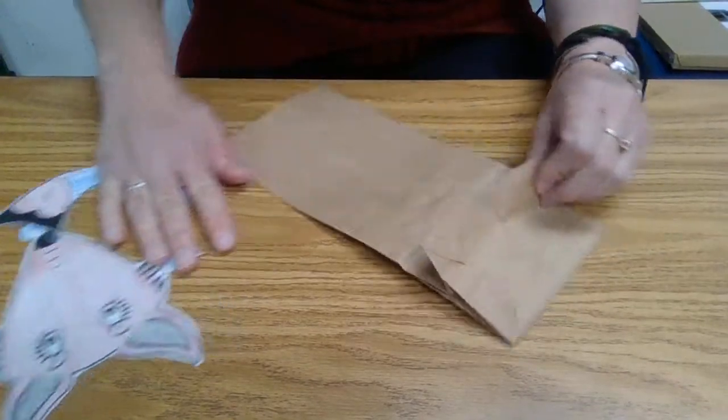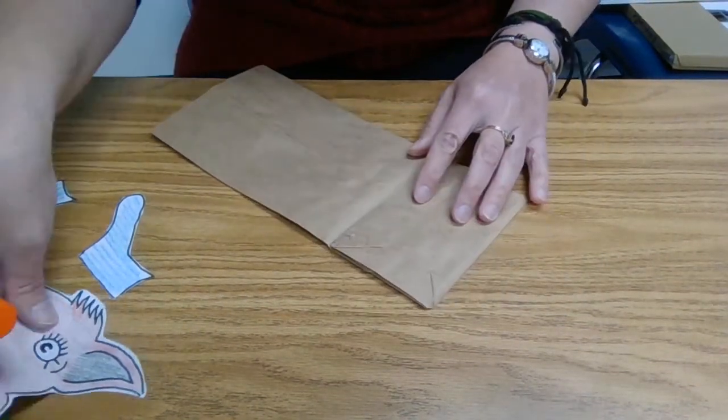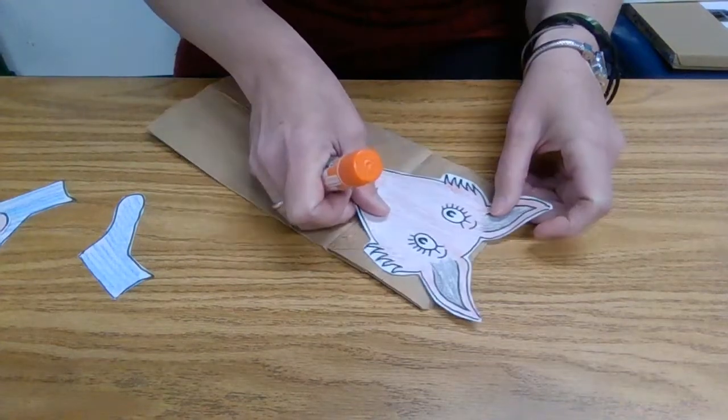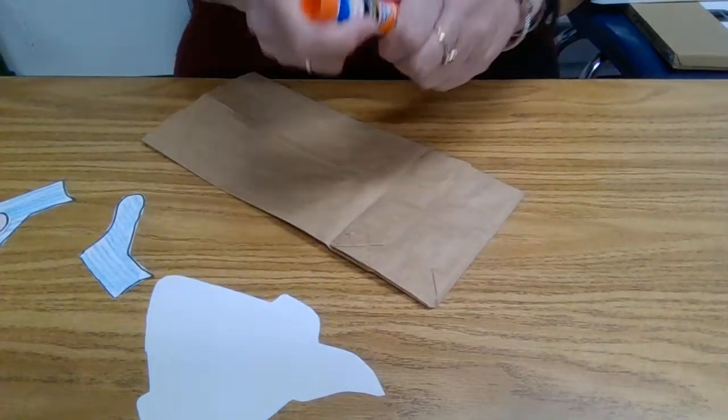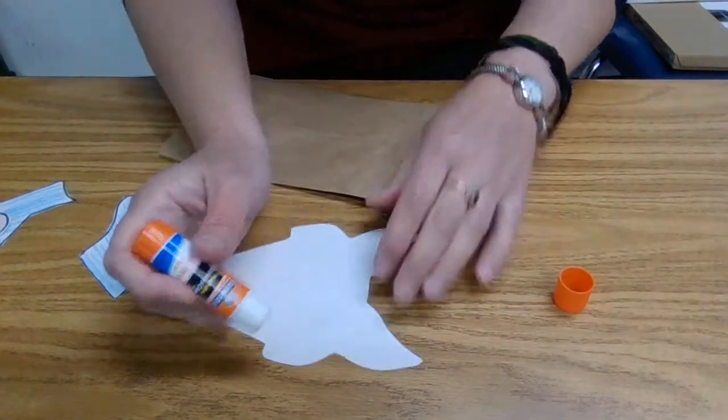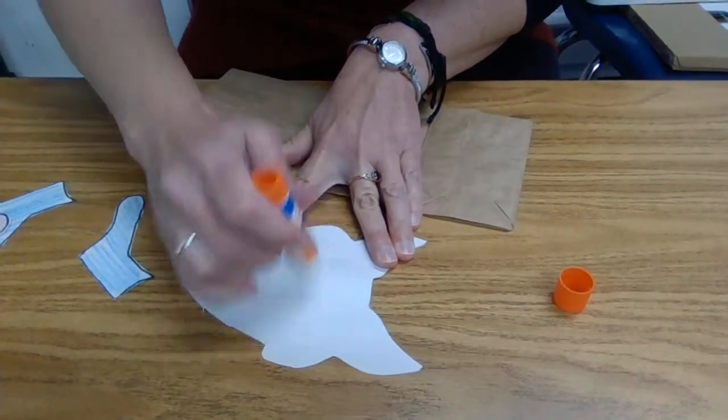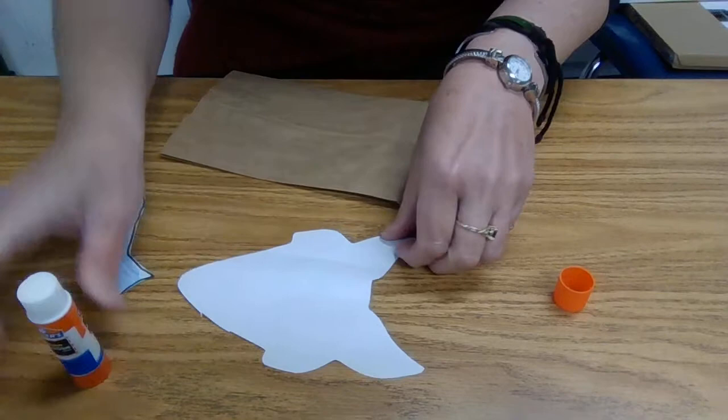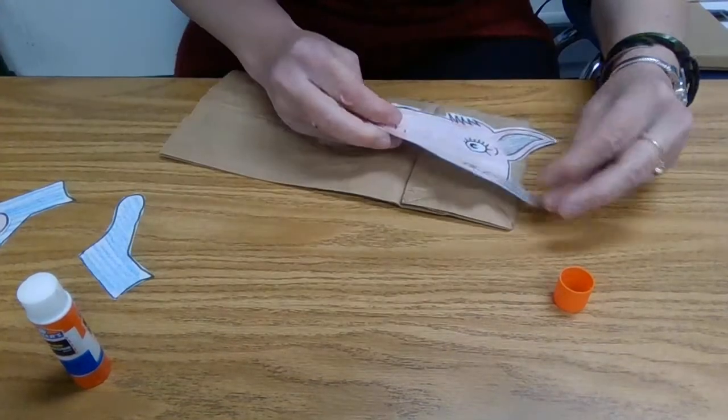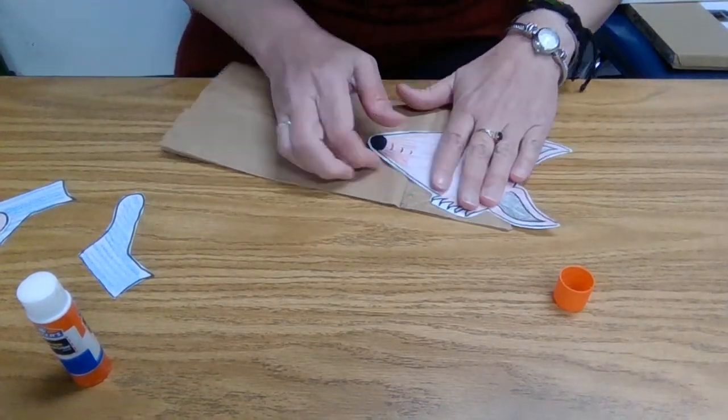So you'll want your paper bag to open this direction, and we're going to glue the fox head onto the front right here. You just need glue where it's going to be on the paper bag, not the whole head. And just stick that on.